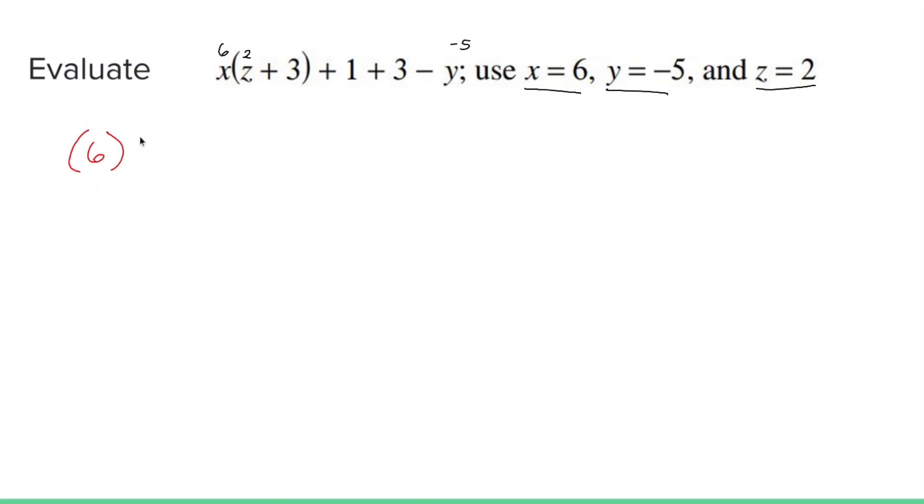So parentheses 6, that opening parentheses, parentheses z which is 2, plus 3 close parentheses, plus 1, plus 3, minus, and then replace that y with negative 5.